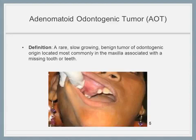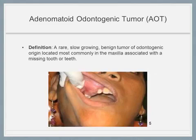AOT is often called the two-thirds tumor. The tumor appears in the anterior maxilla, presents in younger females, is associated with an unerupted tooth, and most commonly involves the canine in two-thirds of all cases.